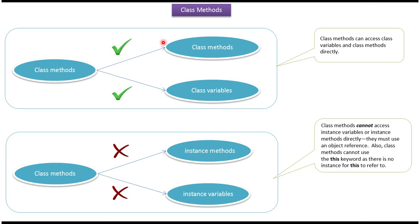Class methods can directly access class methods and class variables. Class methods cannot directly access instance methods and instance variables. Also, from class methods we cannot use the 'this' keyword. If you want to access instance methods and instance variables from class methods, we have to use an object reference.